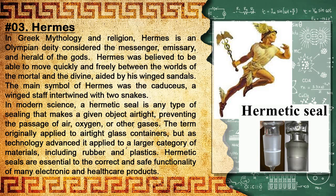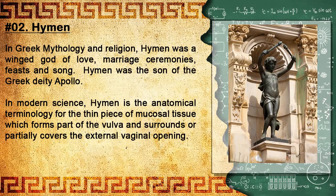Number 3: Hermes. In Greek mythology and religion, Hermes is an Olympian deity considered the messenger, emissary, and herald of the gods. Hermes was believed to be able to move quickly and freely between the worlds of the mortal and the divine, aided by his winged sandals. The main symbol of Hermes was the caduceus, a winged staff intertwined with two snakes. In modern science, a hermetic seal is any type of sealing that makes a given object airtight, preventing the passage of air, oxygen, or other gases. The term originally applied to airtight glass containers but has since applied to a larger category of materials including rubber and plastics. Hermetic seals are essential to the correct and safe functionality of many electronic and healthcare products.